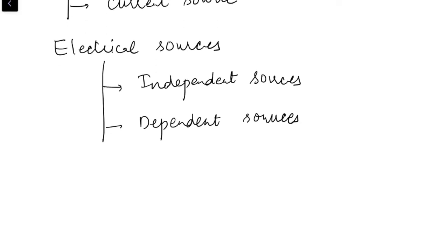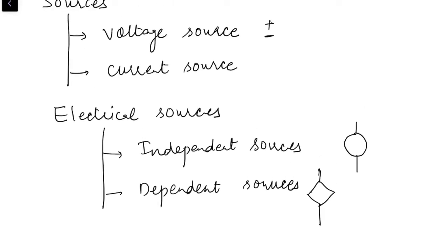Independent sources are represented by a circle shape, while dependent sources are represented by a diamond shape. The shape gives us the indication whether it is a dependent or an independent source. Furthermore, a voltage source is represented by marking a polarity inside the diamond or circle shape, while a current source is represented by marking an arrow inside the circle or diamond shape. We will start with voltage source, followed by current source, then different categories of dependent sources.